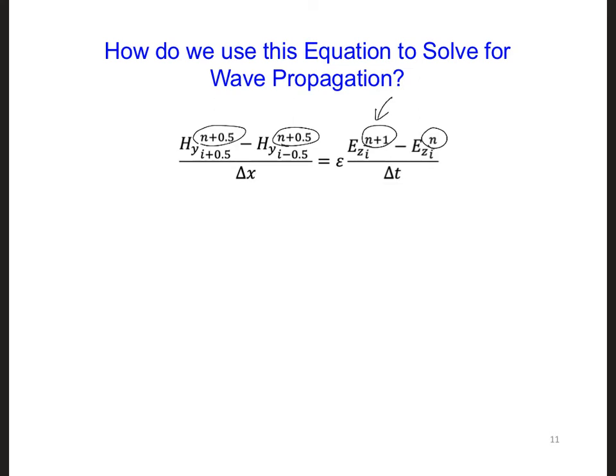Let's solve for the future value of Ez at i and n+1. We can do this by multiplying the entire equation by dt and moving Ez(i,n), this term right here, to the other side of the equation over here.